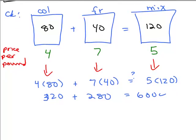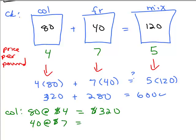Plus we added 40 pounds at $7 a pound, which is $280. So you could see you're spending $600 total for the two. And then the question is, is that the same as if you bought all 120 pounds at once at $5 a pound? And that also is 600.